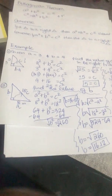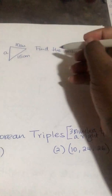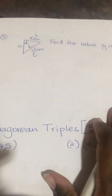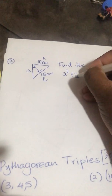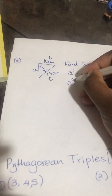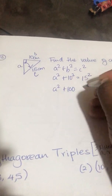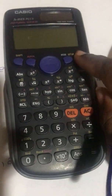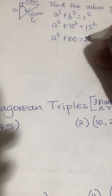Here is another question: find the value of a in this triangle. Label the triangle — this is c, this is b. Here you have units. We'll do it two ways. a squared plus b squared equals c squared. I don't know a; I know b; I know c. a squared plus 100 equals 225.